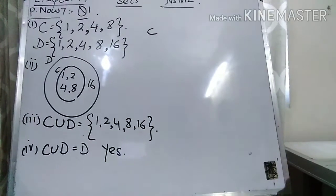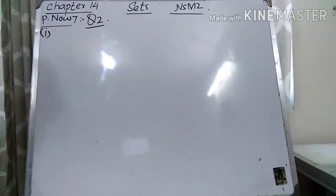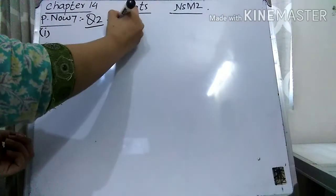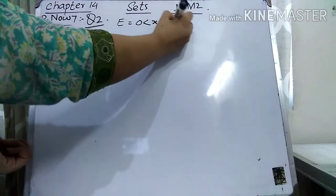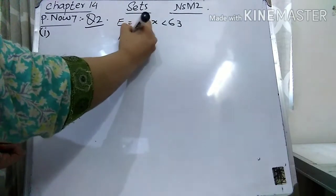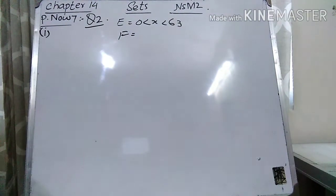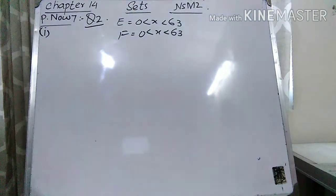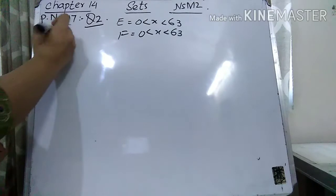Now let's come to question number 2. It is given that E equals X, where X is a multiple of 7 such that 0 < X < 63. And F equals X, where X is a multiple of 9 with the same range: 0 < X < 63. In part 1, we have to write down the elements in E and F in set notation.